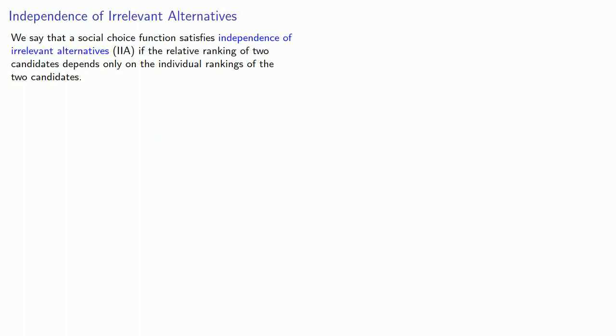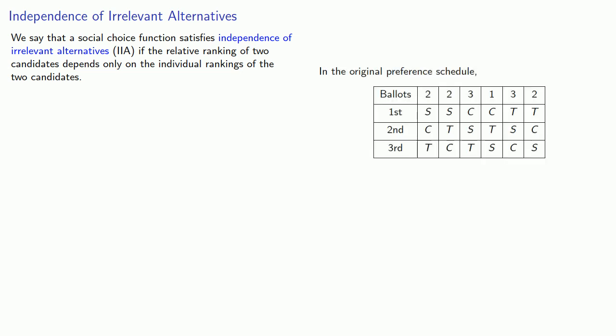Now, when we talk about voting theory, we say that a social choice function satisfies independence of irrelevant alternatives, IIA, if the relative ranking of two candidates depends only on the individual rankings of the two candidates. So we saw that in the original preference schedule, T wins a plurality vote, and there are 1 plus 3 plus 2, 6 voters who feel that T is better than S.